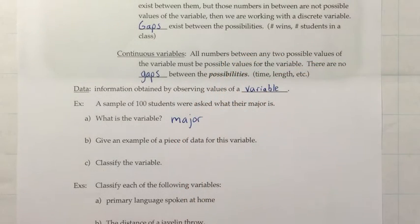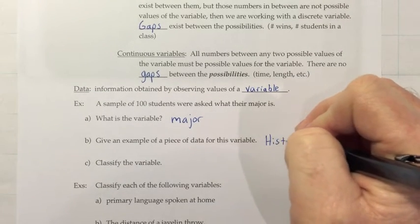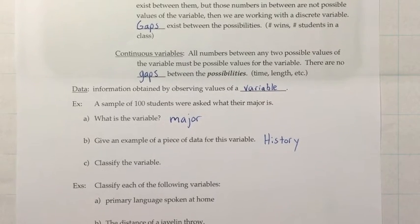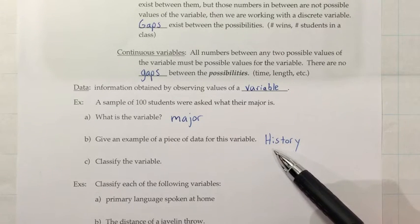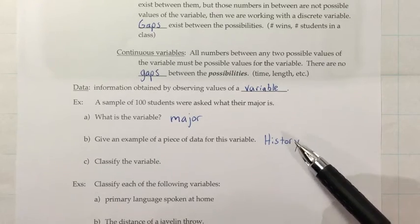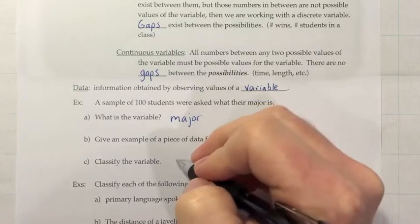And then, give an example of a piece of data for this variable. So, all kinds of answers we can get. Maybe a history major might be an example of something somebody would say. And then, when you go to classify the variable, you think about the kind of pieces of data you get. Since we're getting answers like history, which is a word rather than a number, that means this is a categorical variable instead of a quantitative one.